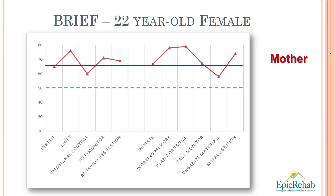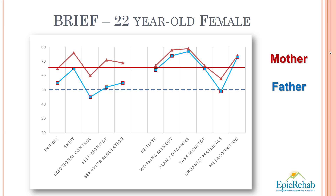Judy's mother rates her daughter much higher on the emotional-behavioral areas of executive dysfunction than her husband did. Her ratings of Judy on the metacognitive types are similar to her husband's. The first thing to notice is that the blind and independent ratings done by the mother and father track each other quite well. This is a crucial indicator of the reliability of observation measures, and one of the reasons I like the BRIEF. Although the BRIEF does have four reliability indicators built in, using it on a blind and independent basis is extremely useful.